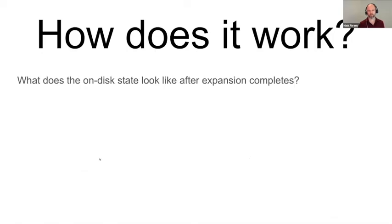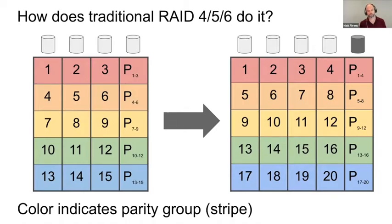All right. So hopefully, that was like exciting that it can happen, but also boring that like there's, you know, you just type it and it does it and then you're done. So I thought that folks would be interested in how does this actually work? And so we'll talk about, I'm going to talk the rest of the talk about kind of how this works and what the design implications are of those design decisions. So first off, we talked, you saw that like it doesn't complete instantaneously. It has to do some work. What is it doing? So we're changing the whole on-disk state. What does this on-disk state look like after the expansion completes?